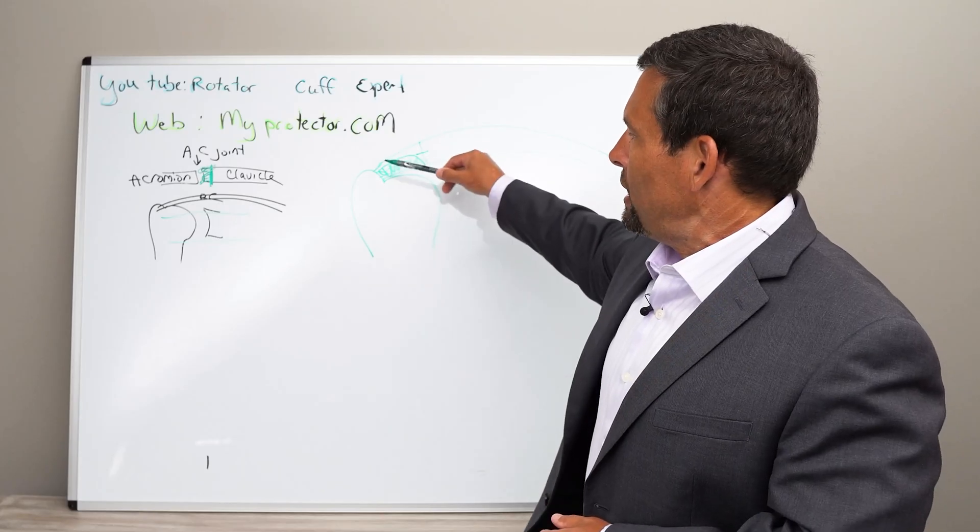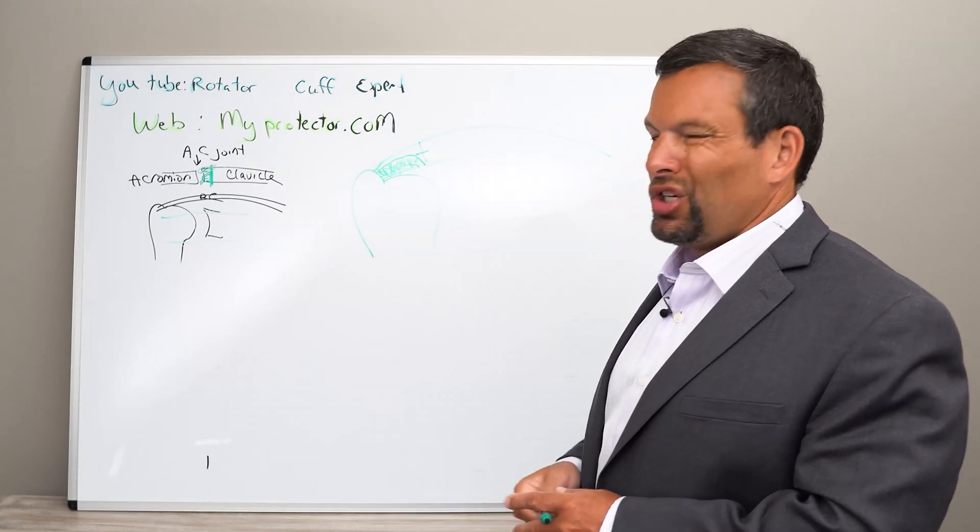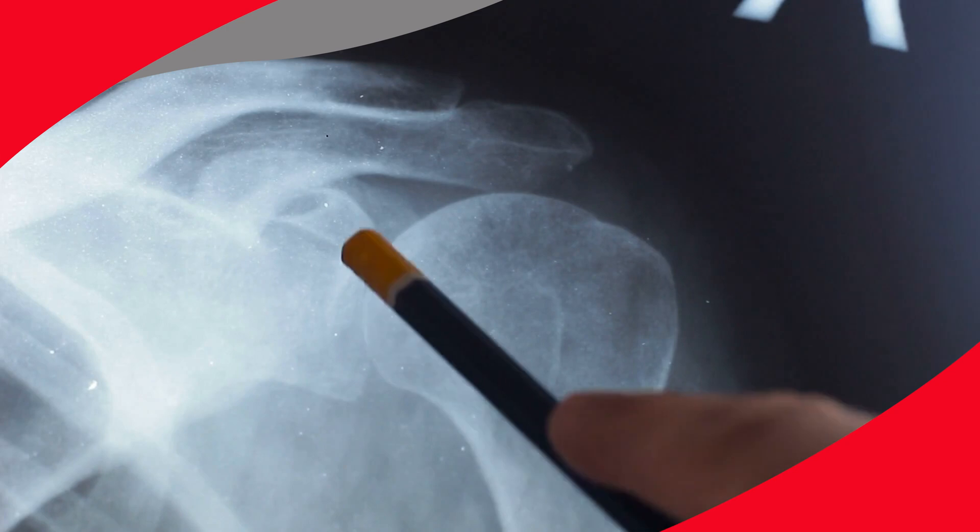So the last one is a full thickness rotator cuff tear, which as you can imagine, it's all the way through. So if you have a full thickness rotator cuff tear, that's when we talk about a more emergent or urgent timing of repairing that rotator cuff.